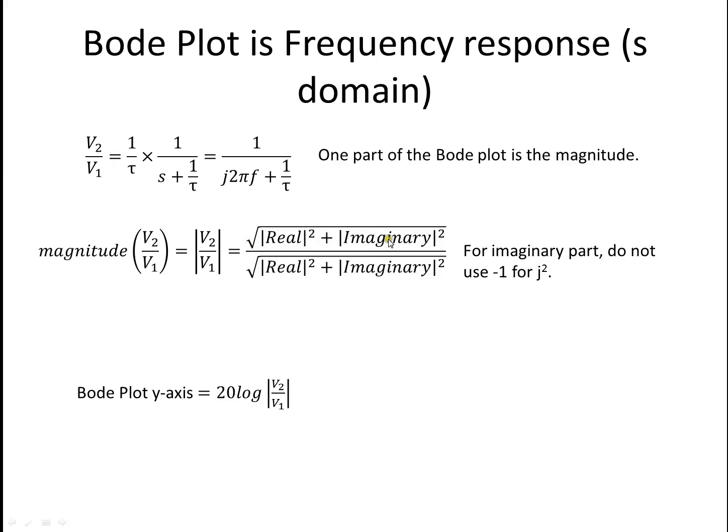And on this imaginary axis part, don't put a minus 1 there. The imaginary part is just 2πf. And then when you plot a Bode plot it's really just 20 times log the magnitude of V2 over V1. Now other presentations have gone over how to do a Bode plot by hand. That's not really what today is about.